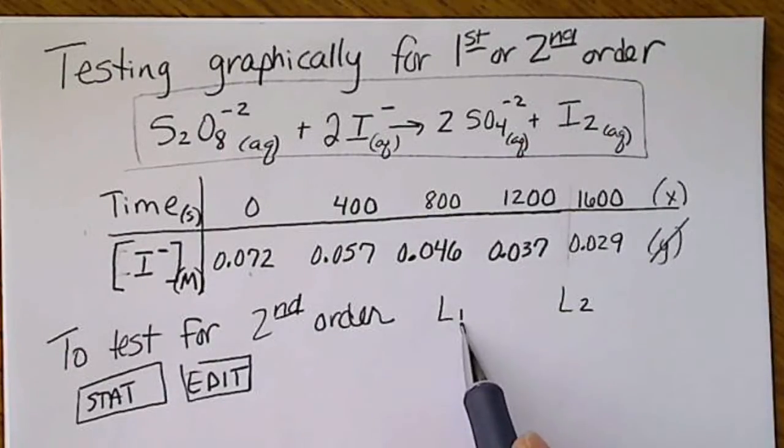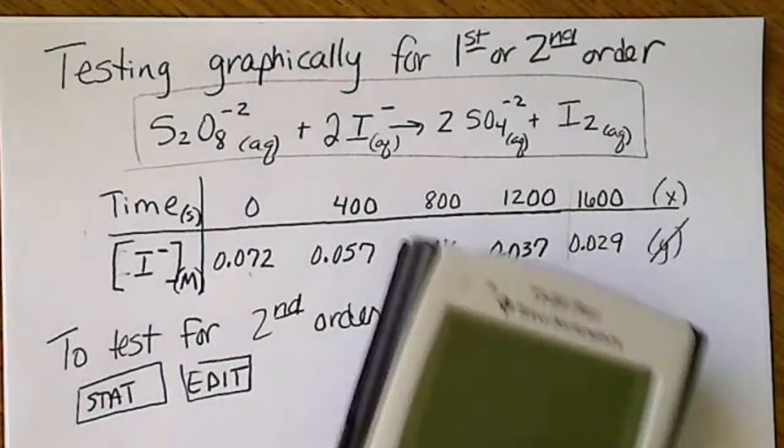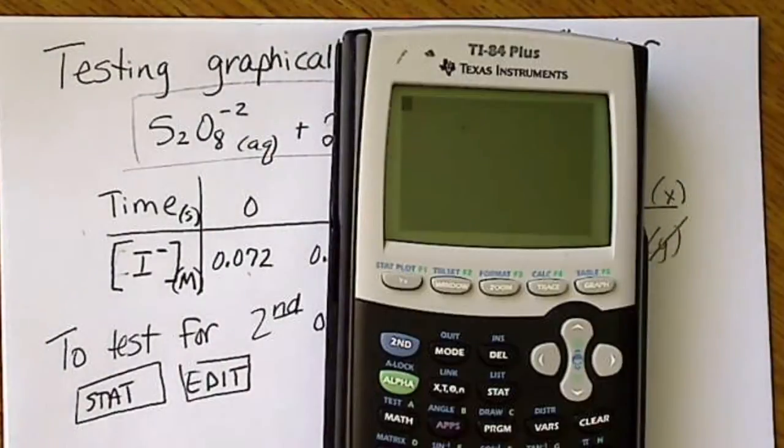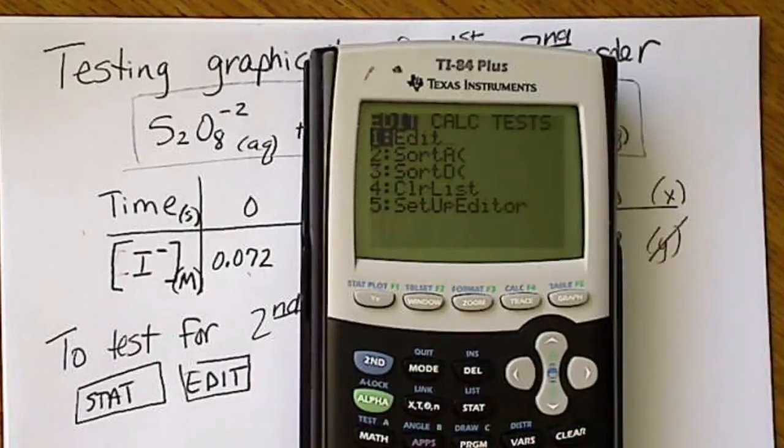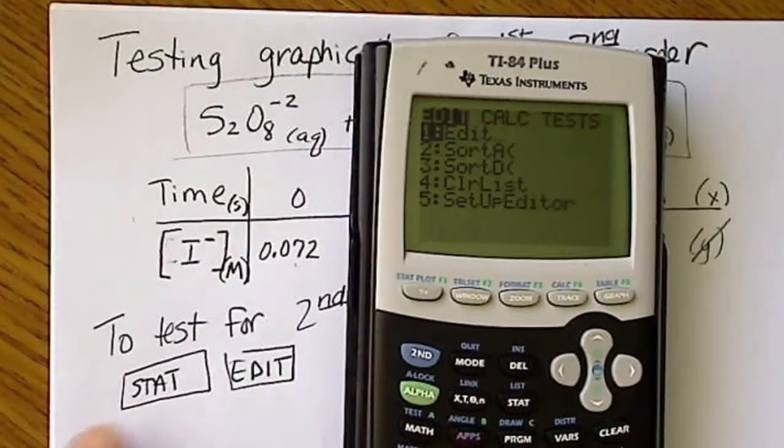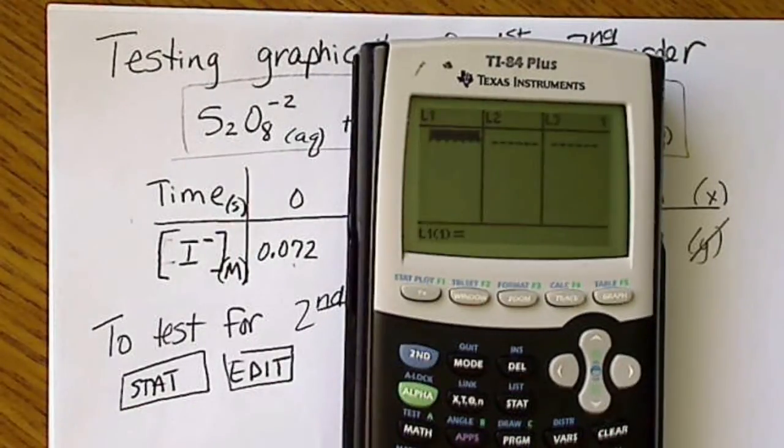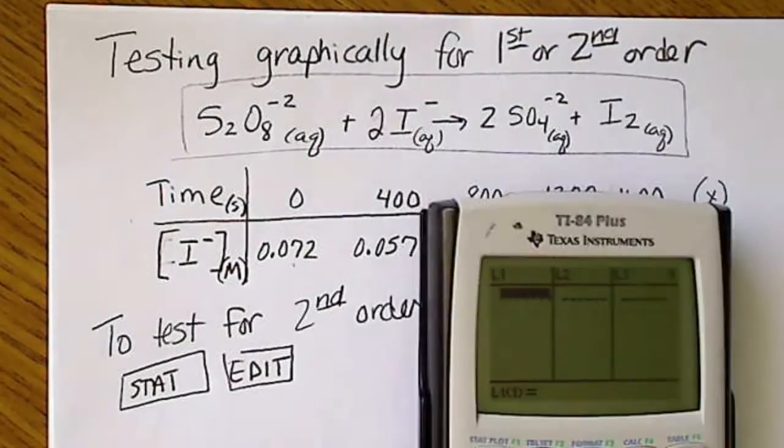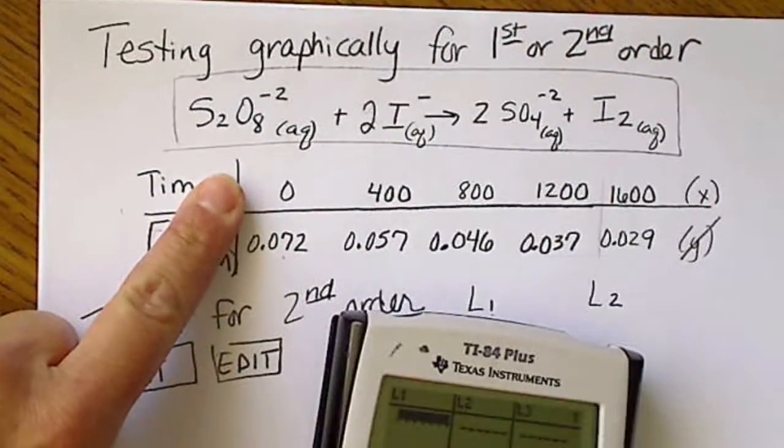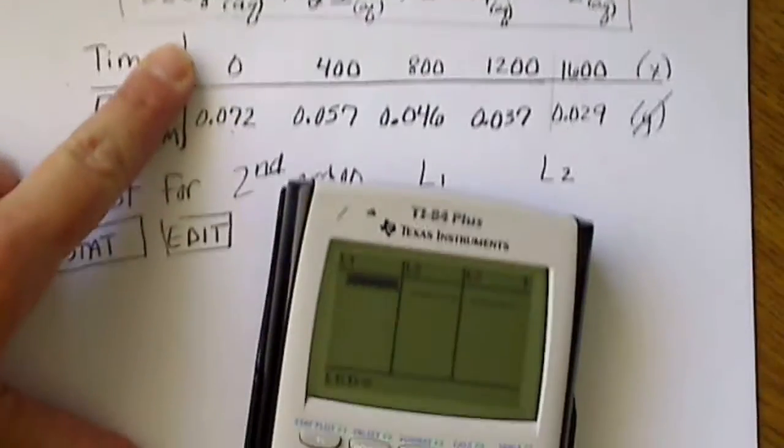And so our L1, if we have the TI calculator under the stat mode, we'll edit the list. So we see stat and edit, and we'll put values in for L1. So the time is always x, so we can just enter those in.